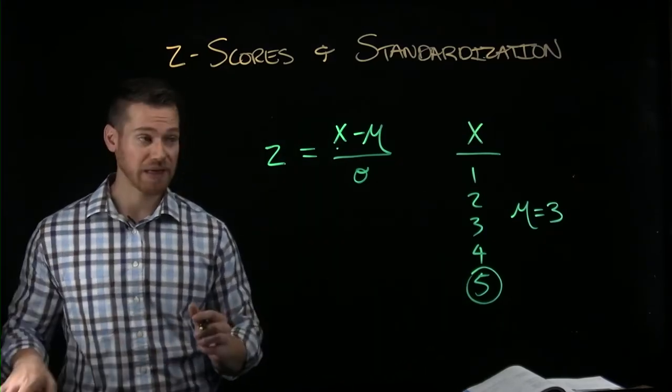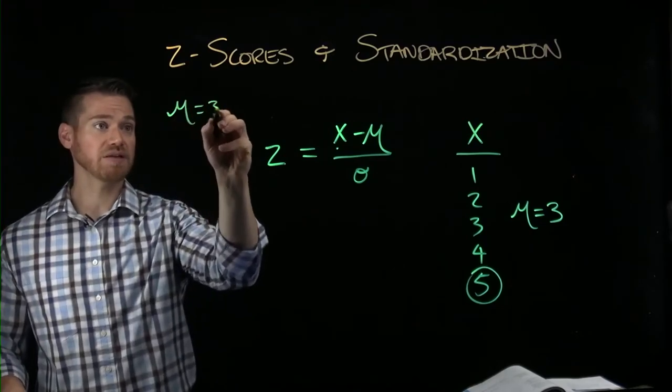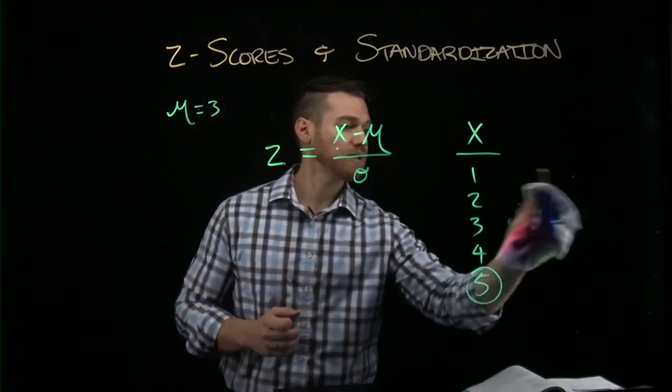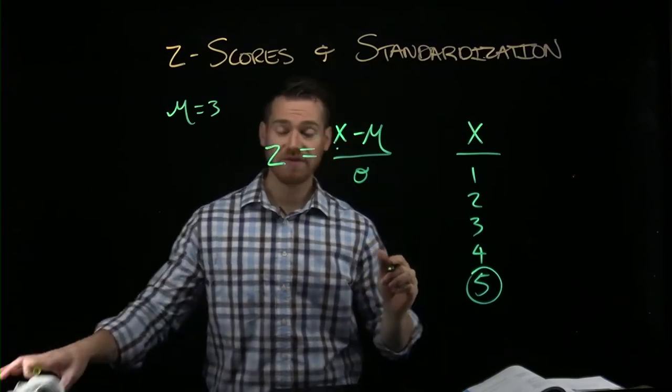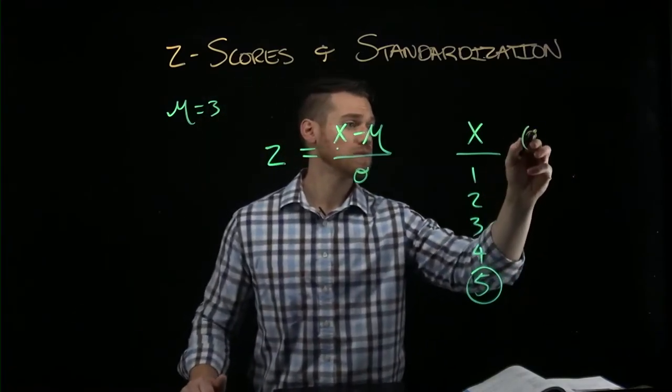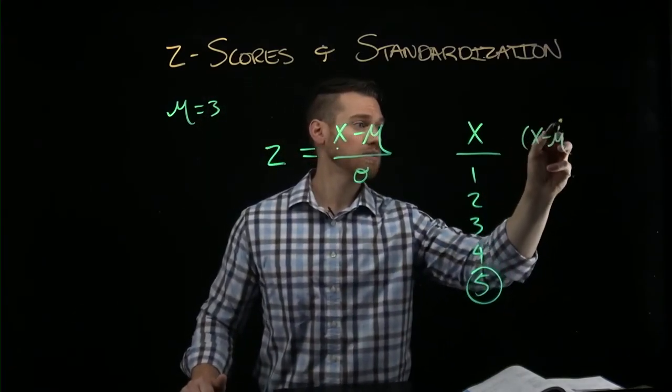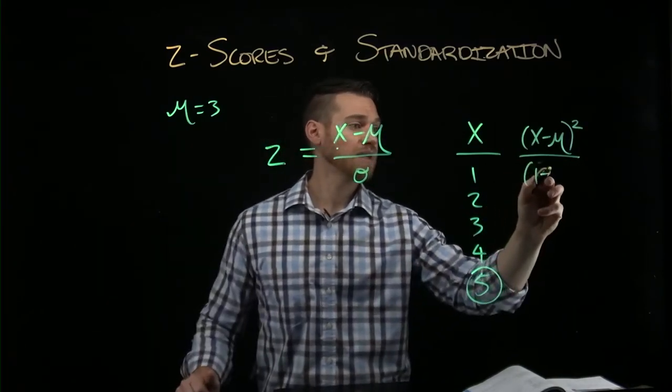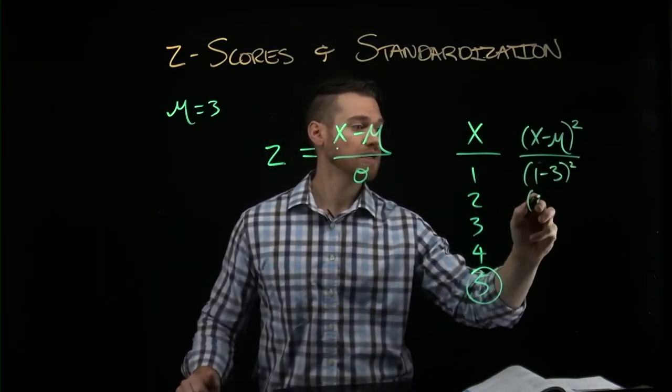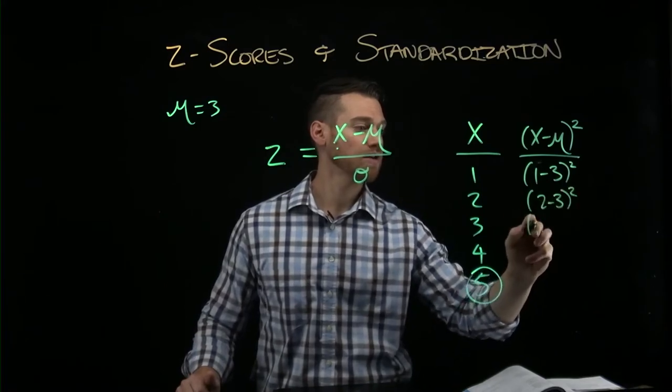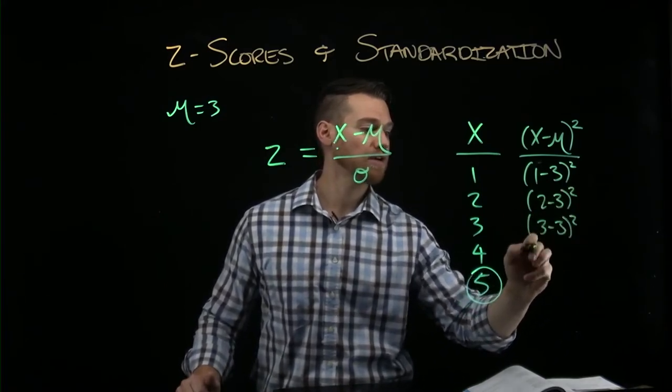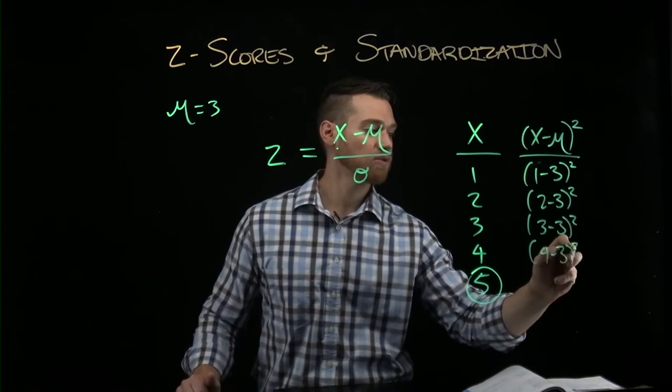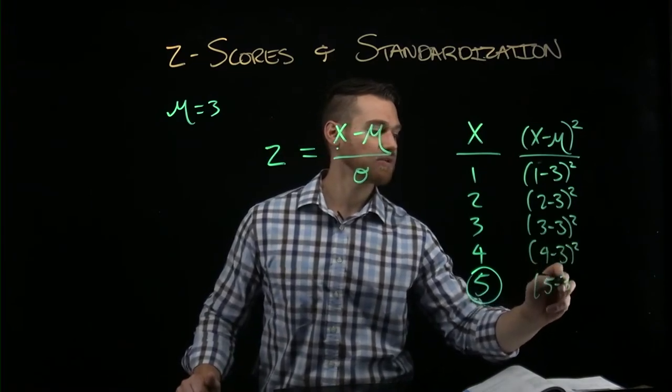So we do that by getting, let's write our mean here and do our math next to it. So the deviations, x minus μ, we're going to square all those. So we're going to get 1 minus 3 squared, 2 minus 3 squared, 3 minus 3 squared, 4 minus 3 squared, and 5 minus 3 squared.